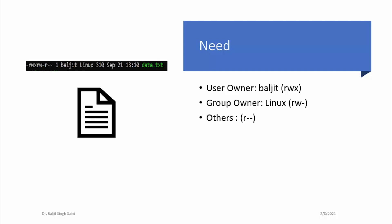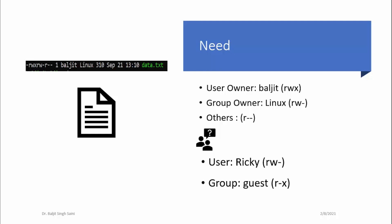Let us take an example to understand this. Suppose there is a file data.txt. The user owner is Baljeet, who has read, write, and execute permission. The group owner is Linux, who has read and write permissions. All others have only read permission. Can you grant user Ricky read and write permissions? Can you grant another group, guest, read and execute permissions? This is not possible using the chmod command.